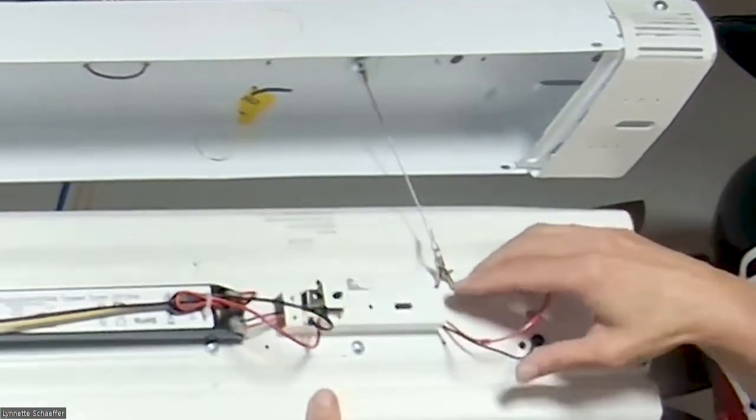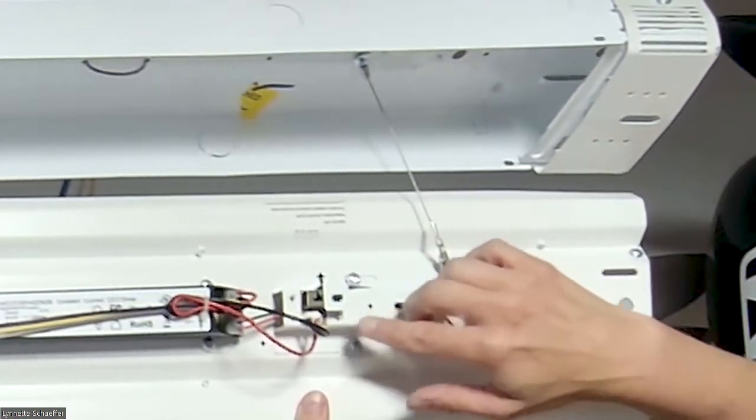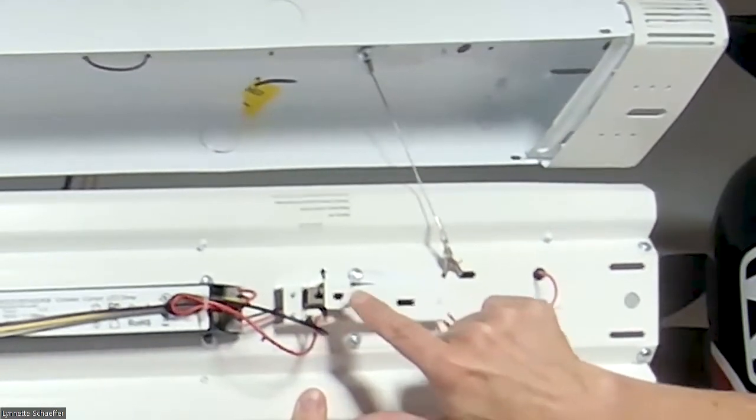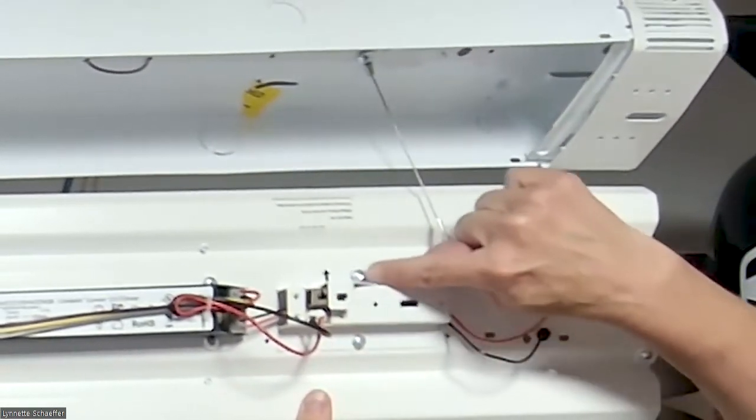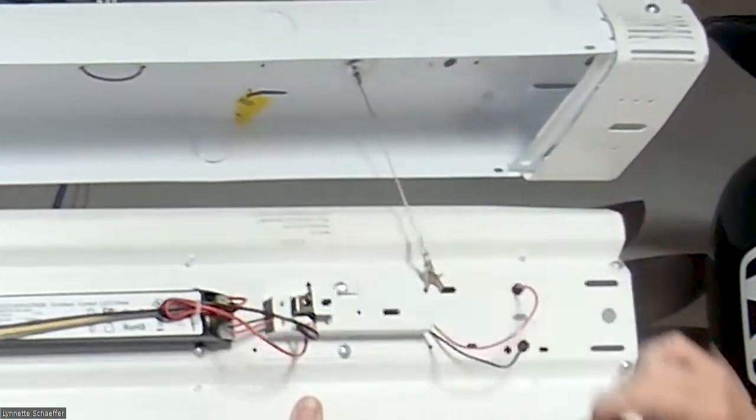Additionally, this particular fixture features power set and field set. This happens to be just a power set version, but you can get power set and field set. You'll notice that in order to change the wattage, you would have to just loosen up the screw, then you would move it over, you would tighten up the screw.